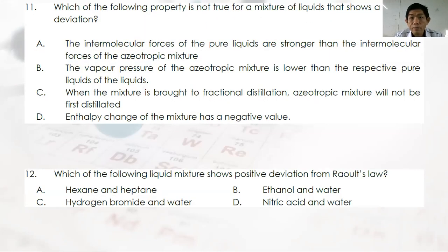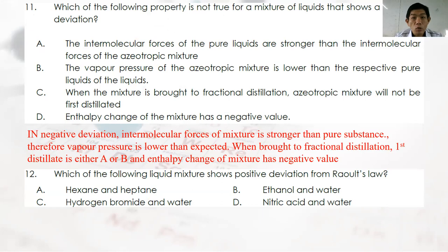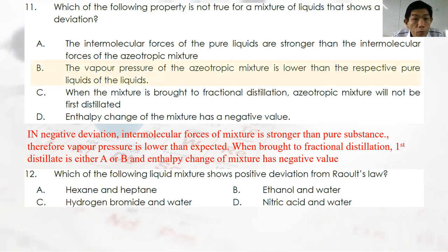Question 11: Which property is NOT true for a liquid mixture showing negative deviation? In negative deviation, intermolecular forces between mixture components are stronger — so vapor pressure is lower than expected. The azeotropic mixture also has lower vapor pressure. In fractional distillation, the azeotropic mixture will not be the first distillate. Enthalpy change for negative deviation is negative. All options A, B, C, D appear to be true — so there is no single incorrect answer in this case.